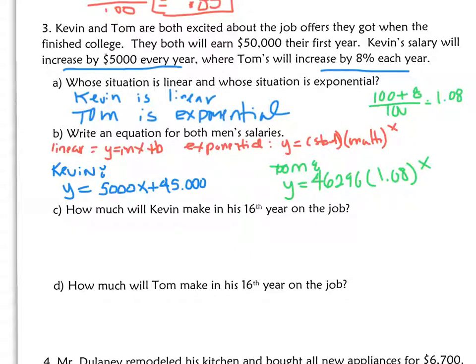Why did we go through all this work? It's so we can answer the next two questions. How much money will Kevin make in his 16th year in his job? Well, you have to plug in 16 for x, 5,000 times 16 plus 45,000. What does it equal? Figure it out and write down the answer.